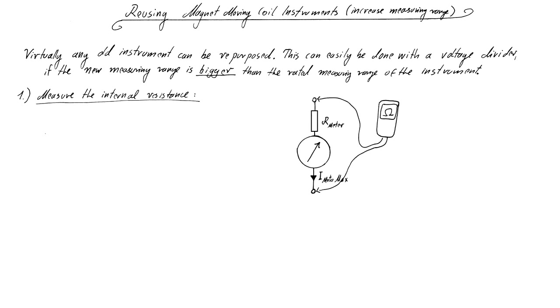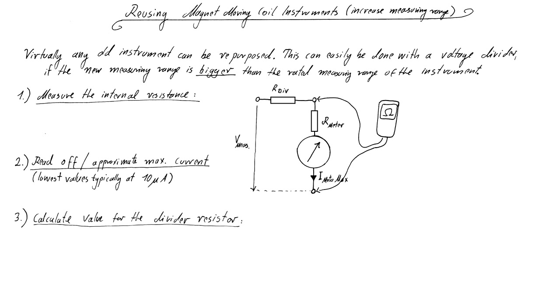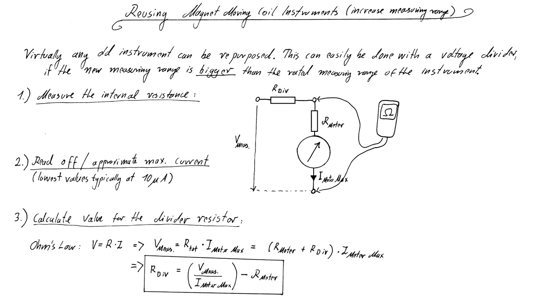First, you have to measure the internal resistance of the meter. You can simply do that by connecting it to a multimeter. Second, read off the maximum current that the meter was rated for. With professional instruments, a current rating can be found on the back side. If no rating is printed on the enclosure, you have to approximate the value. The lowest typical value is 10 µA. So if you don't know it better, you should treat the instrument as if it was made for that low value and then work your way up experimentally until you know the true value. Third, calculate the value for a divider resistor that has to be connected in series in order to set the measuring range and prevent the instrument from being destroyed. You can do that by simply using Ohm's law and transposing for the divider resistor. The size of the resistor required is the maximum value of the voltage measuring range divided by the maximum current minus the internal resistance of the instrument.